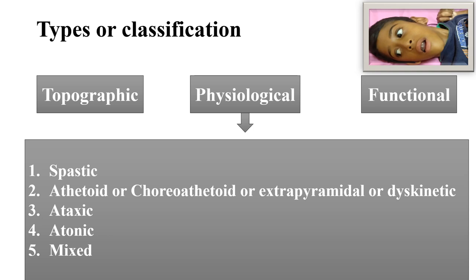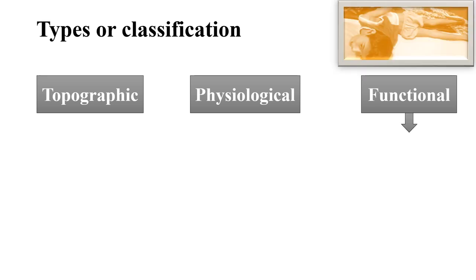In physiological classification: if there is involvement of the pyramidal tract and the patient has spasticity, we label it spastic CP. If due to extrapyramidal tract involvement the patient has involuntary movements, we label it athetoid, choreoathetoid, extrapyramidal, or dyskinetic CP. If there is cerebellar involvement with all features of cerebellar dysfunction, we label it ataxic CP. If due to extensive brain damage the patient has atonia, we label it atonic CP. If the picture is mixed, we label it mixed CP.